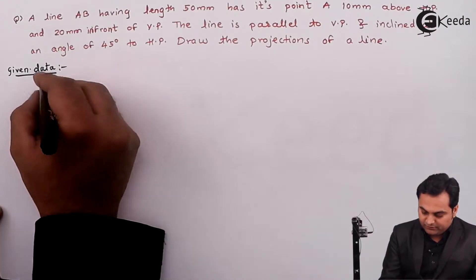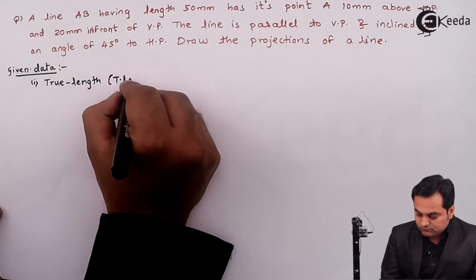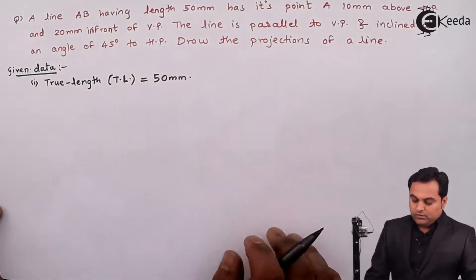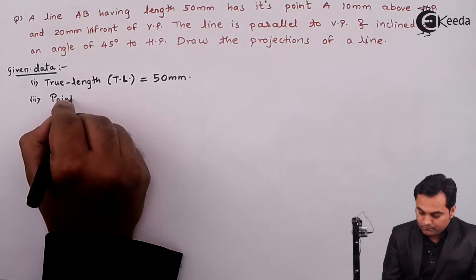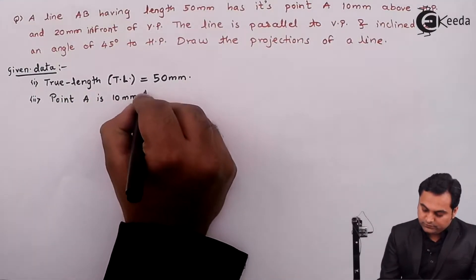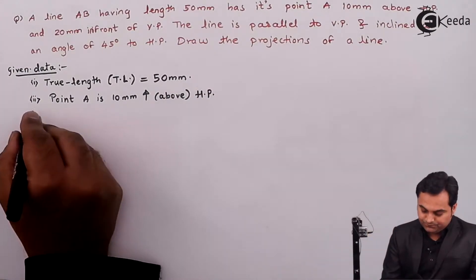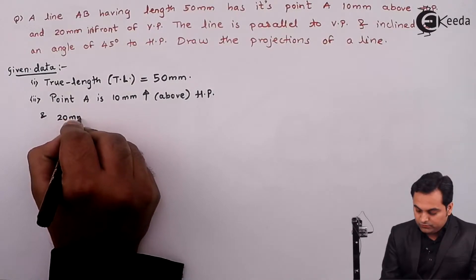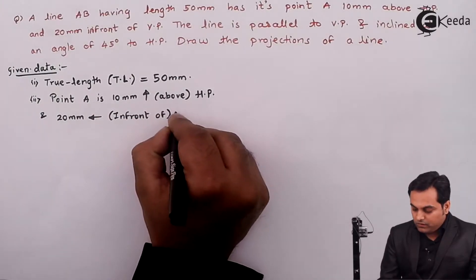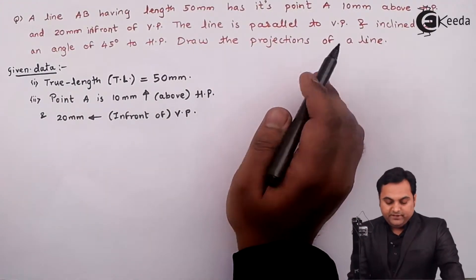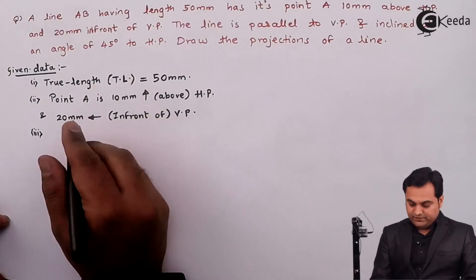Line AB having length 50 mm — that will be called as the true length of the line. True length is 50. Point A is 10 mm above HP and 20 mm in front of VP. The line is parallel to VP and inclined at an angle of 45 degrees to HP. Inclination with HP is denoted as theta.